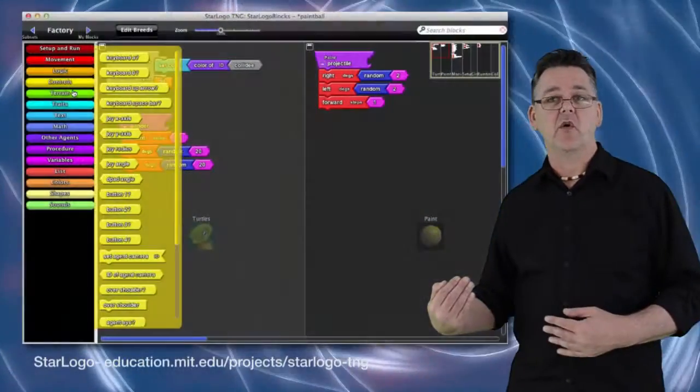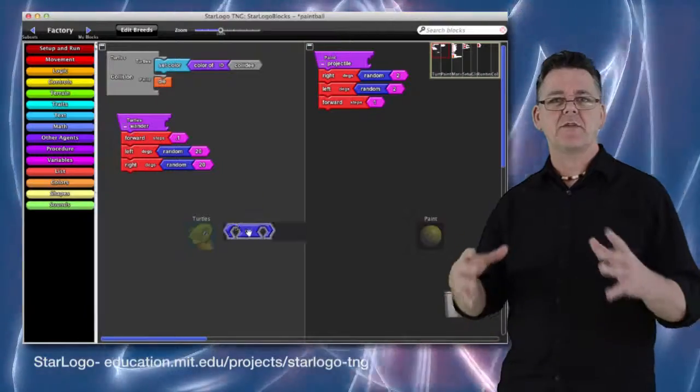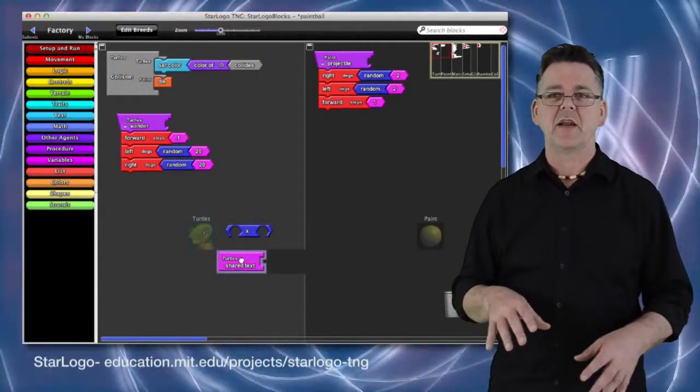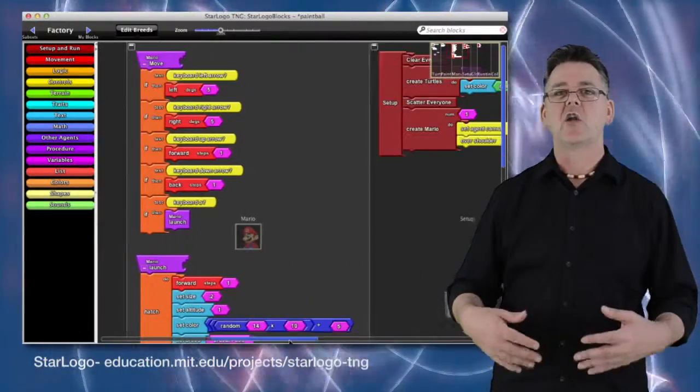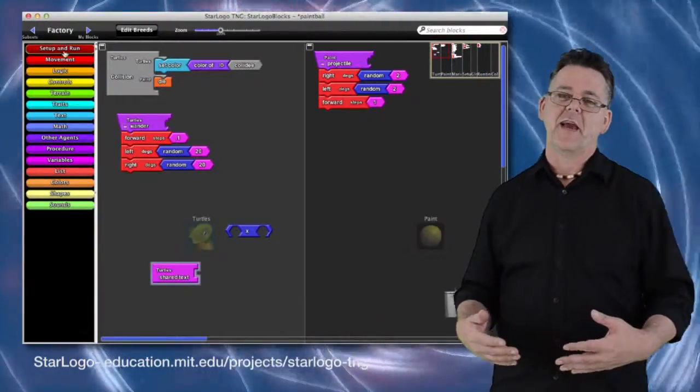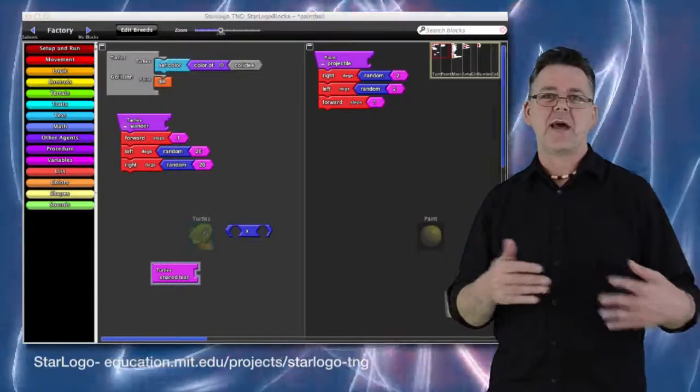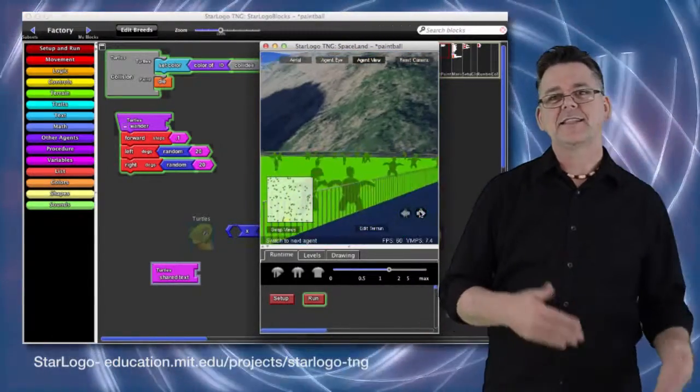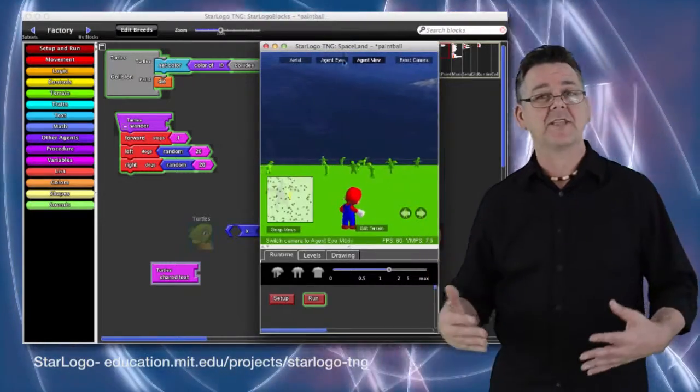Then there's StarLogo. StarLogo takes the concept of Turtles from the original Logo programming language developed by Seymour Papert and it supercharges it with a whole lot of options for complex programming. And again, it uses this idea of snap-together blocks to develop flow and logic in the code. And it starts to integrate some quite complex mathematical thinking.